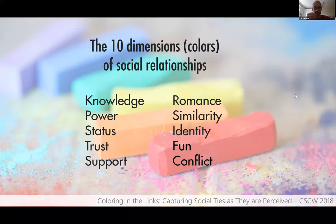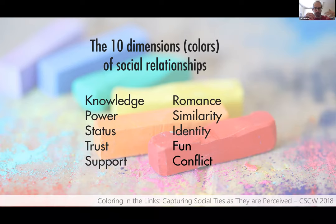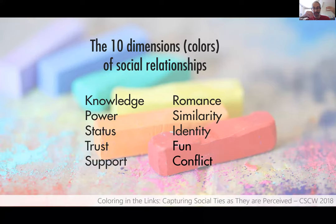Every relationship can be composed of a combination of these concepts. Think about any of your friends — at a high level, you can describe your relationship with them as a probability distribution of these topics. With a colleague at work, you might have a relationship about knowledge, but also fun and identity because you work in the same place. With your partner, it might be about support and romance. We expect that different relationships will have a combination of these dimensions. Now we know this exists, but the problem is: how do we extract these dimensions from network data?